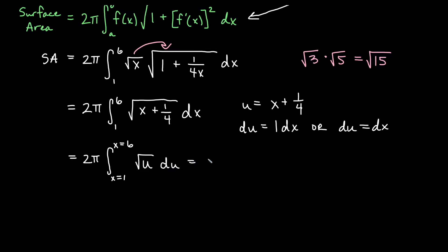You can think of this as a power rule if you would like. So we'll have 2π from x equals 1 to x equals 6, really u to the one half du. Then our power rule gives us the anti-derivative with an increased power of one. So a half plus one would give us u to the three halves.